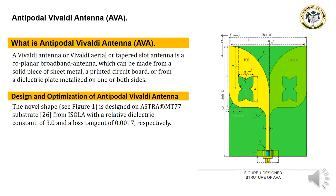What is Antipodal Vivaldi Antenna, or AVA? A Vivaldi Antenna, also called a Vivaldi Aerial or Tapered Slot Antenna, is a co-planar broadband antenna which can be made from a solid piece of sheet metal, a printed circuit board, or from a dielectric plate metalized on one or both sides.